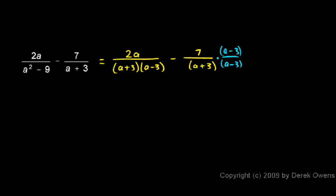And now I have a common denominator and the fractions can be combined. This is going to be 2a minus, and over here I have a 7 that distributes through the a and through the minus 3, so it's 2a minus 7a minus 21.